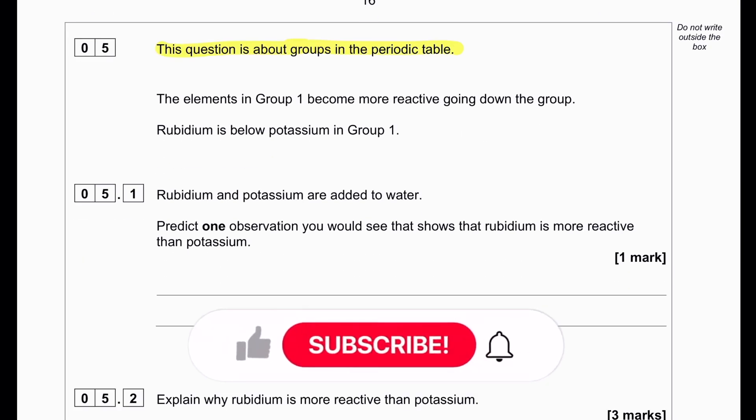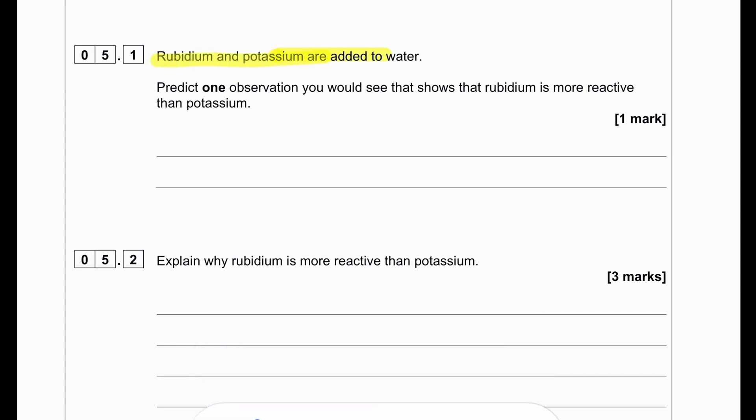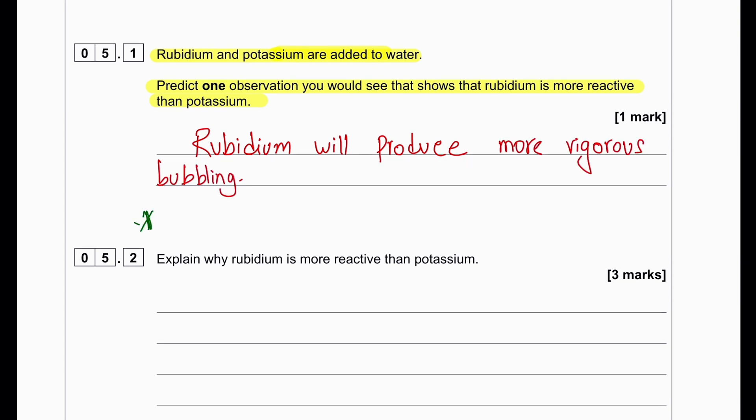This question is about groups in the periodic table. Elements in group 1 become more reactive down the group. Rubidium is below potassium in group 1. Predict one observation you would see that shows rubidium is more reactive than potassium. The moment rubidium touches water, it will have vigorous bubbling and it will catch fire and produce a brighter flame.